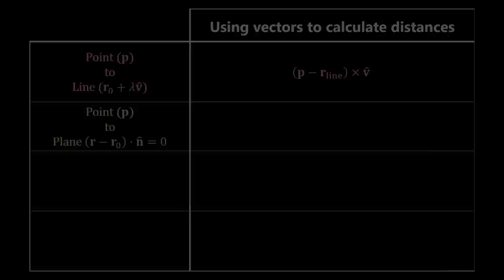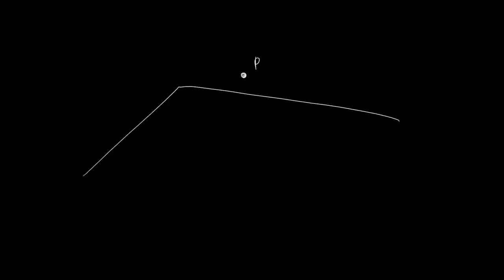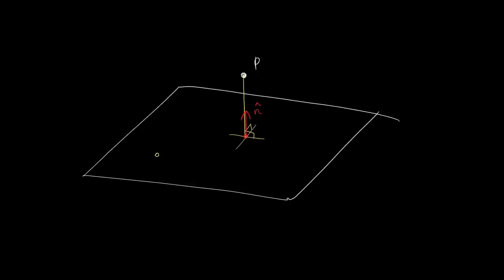Next we look at calculating the distance between a point and a plane. The distance is clearly the perpendicular distance from the point to the plane, pointing in the direction of the normal vector. The key is that doing the dot product with a unit vector in a certain direction gives you the component of the vector in that direction. Therefore, if we find any vector joining the plane to the point — p minus r_plane, where r_plane is any position in the plane — then we do the dot product with the unit normal vector n hat, and we end up finding the distance we want.